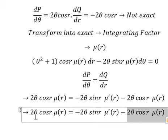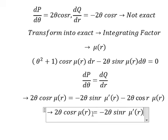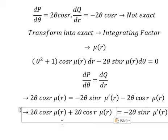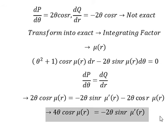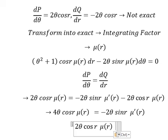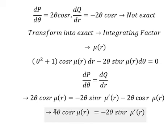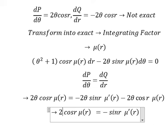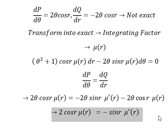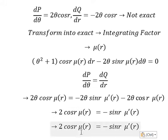I will put this on the left with a positive sign. 2 theta cosine r always come together, so we have number 4. Next, we divide both sides by 2 theta. We simplify this one here.